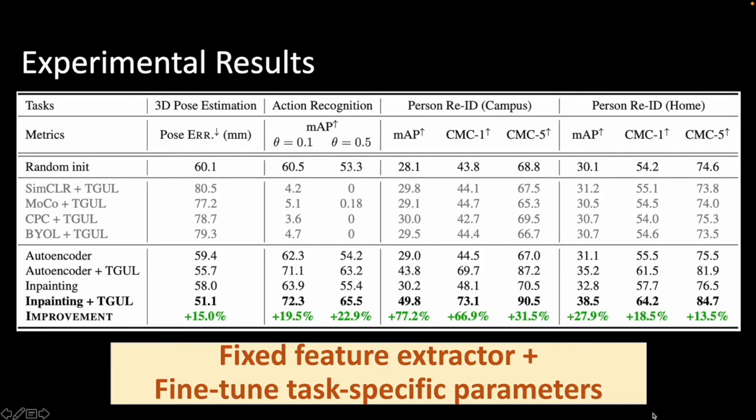Secondly, the table shows that contrastive pretraining performs worse on all downstream tasks. This is because contrastive learning learns shortcut semantics irrelevant to the task of interest.